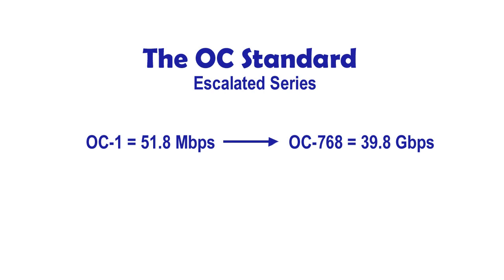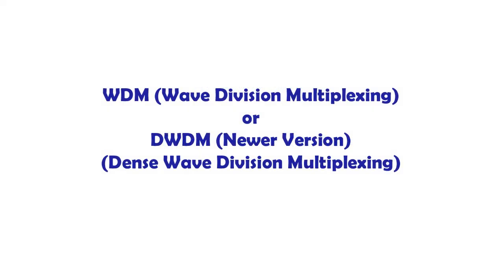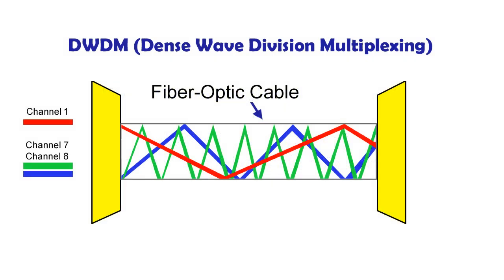If even more throughput is needed, we start using another feature called wave division multiplexing, or WDM, and one of its newer versions is called dense WDM, or DWDM. DWDM allows a single mode fiber optic cable to carry multiple signals by having each signal use a different wavelength. What each can actually carry varies from cable to cable and connection to connection, but a single fiber can potentially support up to 150 signals.